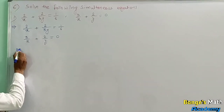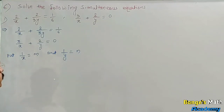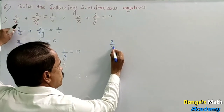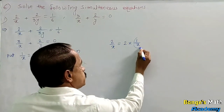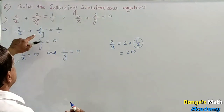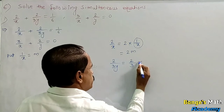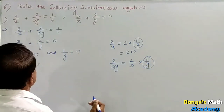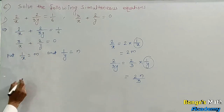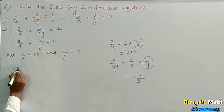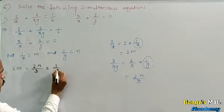Put 1 upon x equal to m and 1 upon y equal to n. Then the first part, 2 upon x, can be written as 2 into 1 upon x, which gives 2m. The second part, 2 upon 3y, can be written as 2 upon 3 into 1 upon y, giving 2n upon 3. So we get 2m plus 2n upon 3 is equal to 1 upon 6.